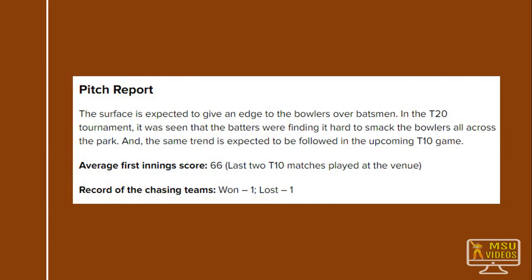The average run score for the last T10 tournament was 66. Out of two matches, one team easily chased down the score and the other match was lost. In the T20 tournament, bowlers have the upper hand over batsmen — batsmen are finding it very difficult to hit the ball. You can expect a similar kind of bowling domination in the T10 format as well.